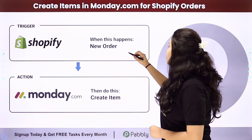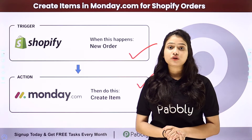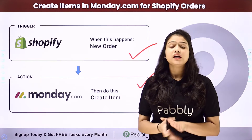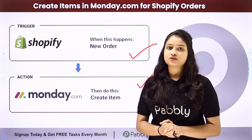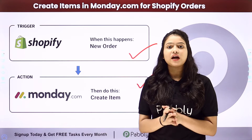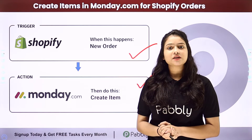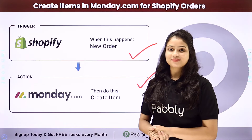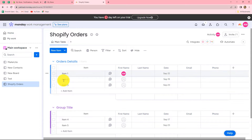We have Shopify in our trigger and monday.com in our action. We will be connecting both of them using Pabbly Connect so that as soon as a new order is placed in your Shopify store, automatically the details of that order will be added in monday.com so that you can create a good record of all the orders. Whenever a new order is placed in Shopify, the details will be added in our monday.com board.